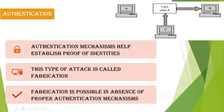If authentication is not maintained, user C — a third person — can act like user A and send messages to user B. This means a third person is wrongly accessing the data and pretending to be the legitimate user. Such an attack is called fabrication — only fabricated data is sent to the recipient. If fabrication is possible, there is no authentication maintained in the network.